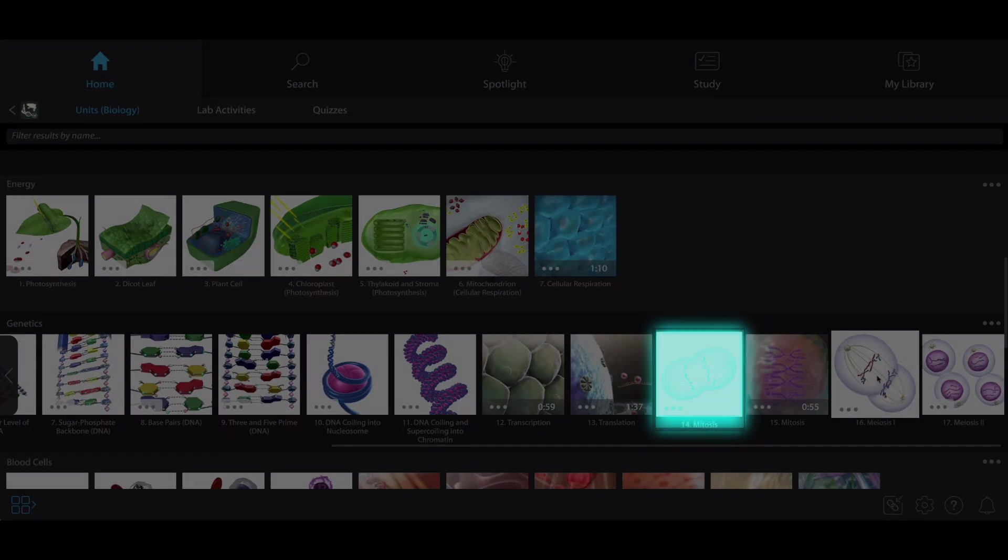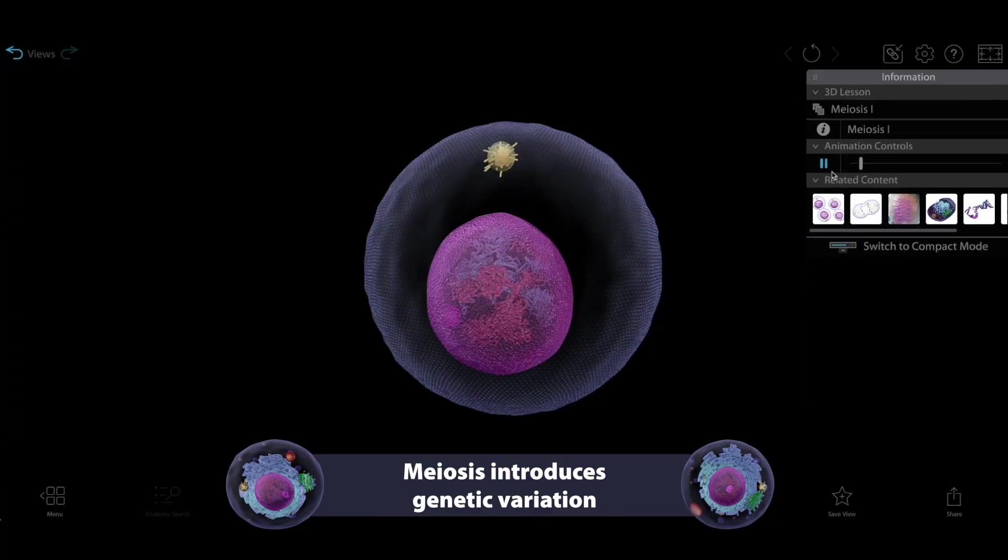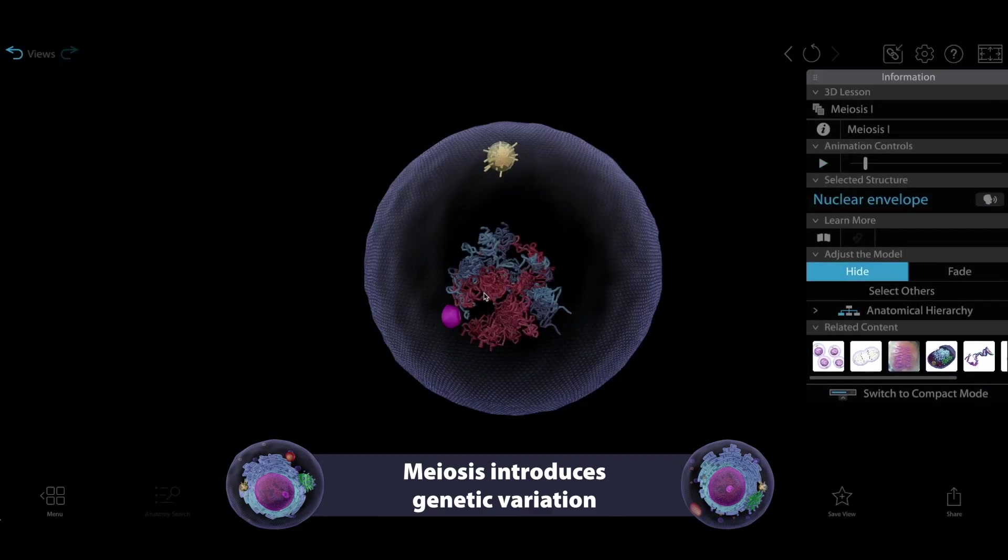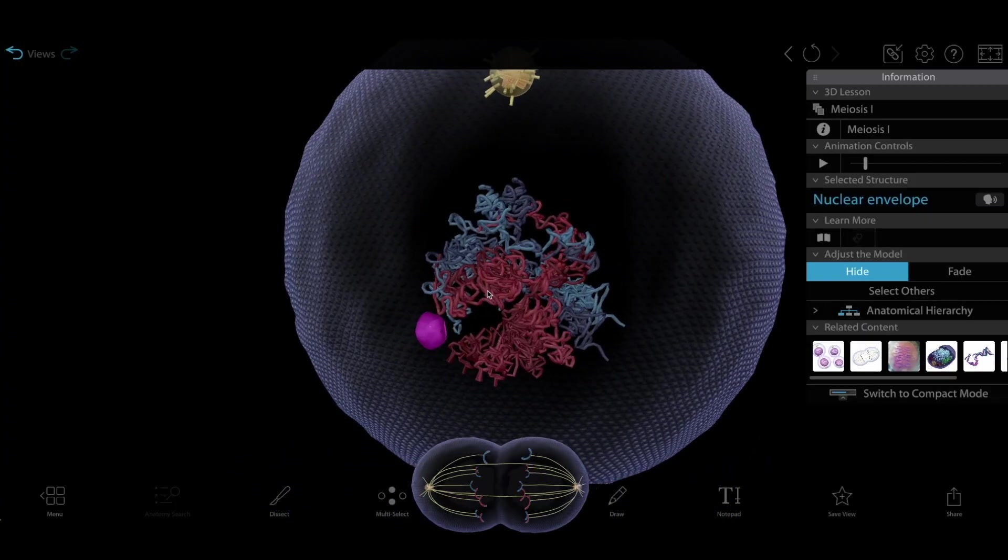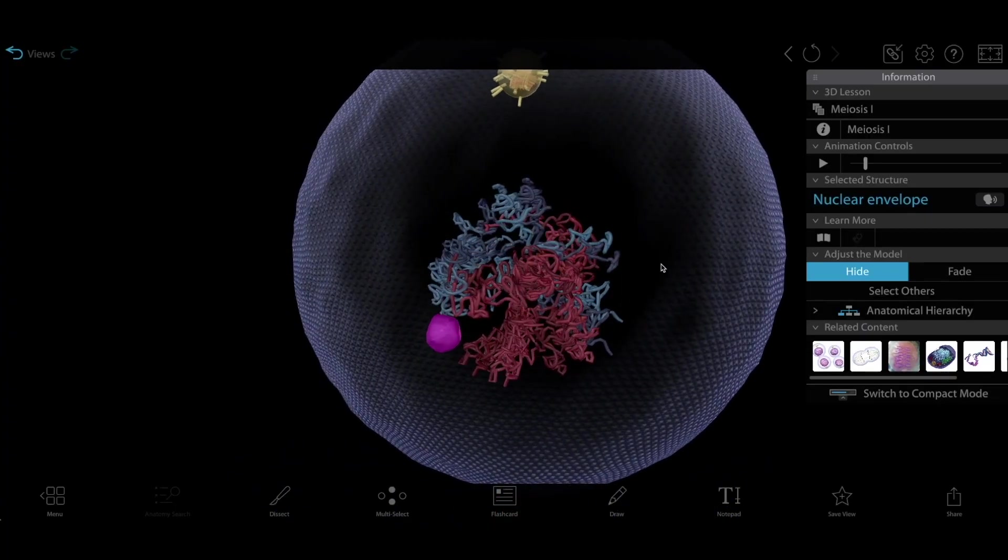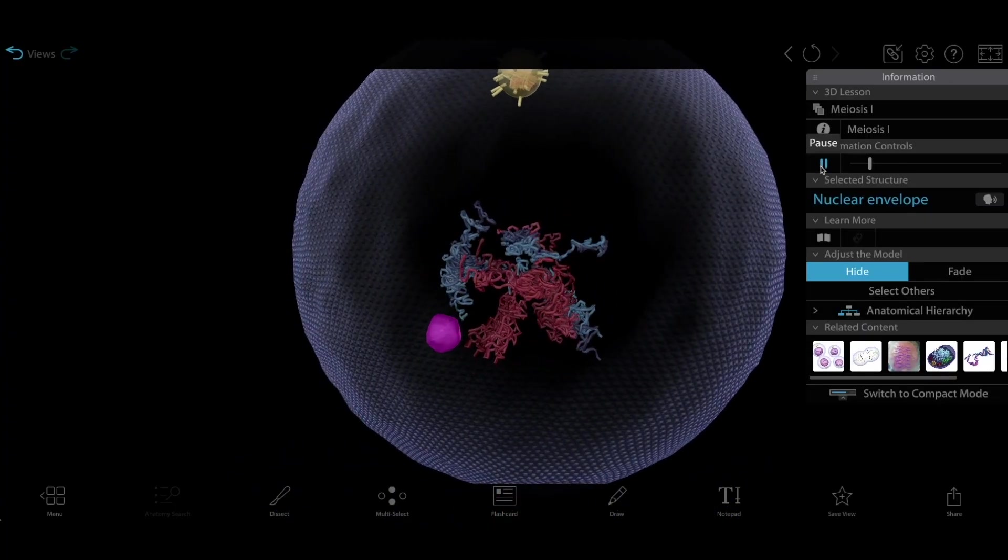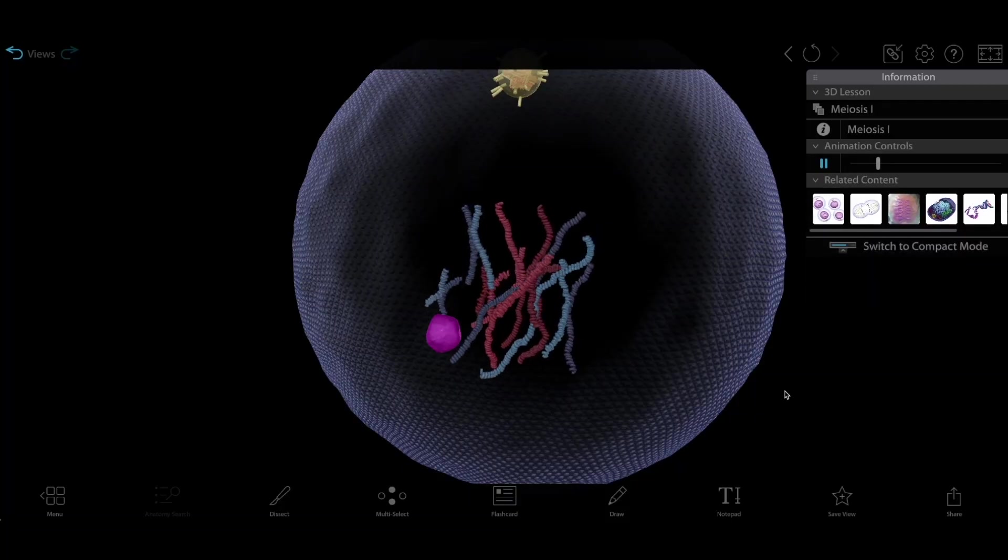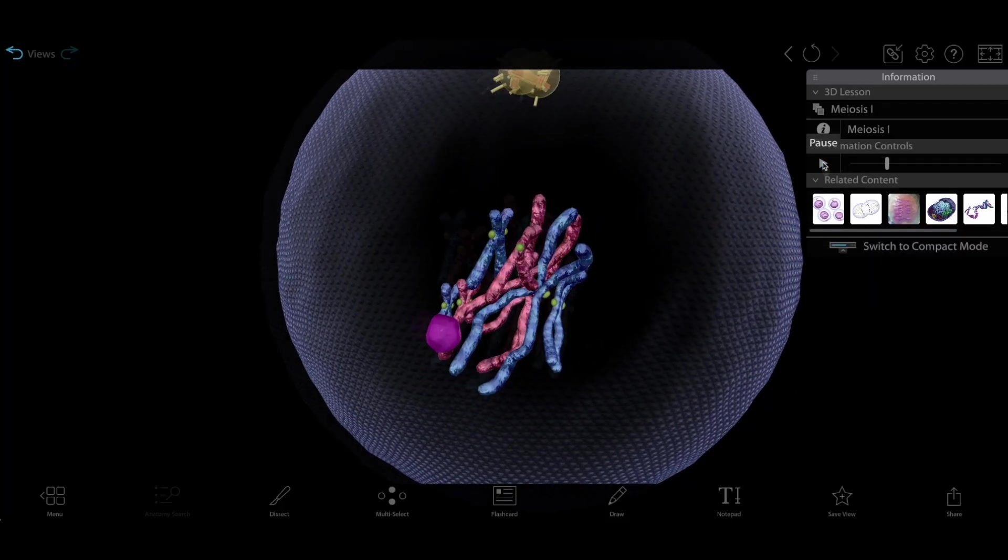So let's open up the meiosis one model. Meiosis one starts with the replication of chromosomes, just like mitosis. But right away, you'll notice some key differences. The parent cell in this simulation still starts with eight chromosomes, four red and four blue, but the replicated red and blue chromosomes pair up.